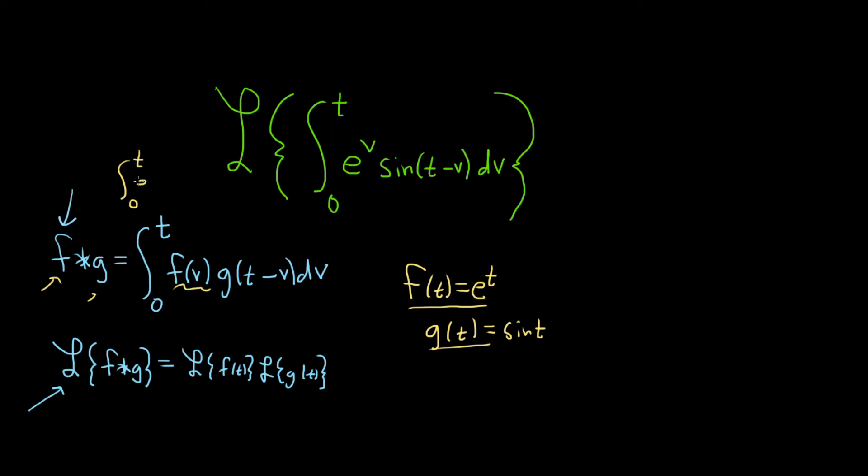And then g of t minus v. That would be sine of t minus v dv. And you see it's exactly what's in the Laplace transform. So it does actually work. So now we can just use our convolution theorem.